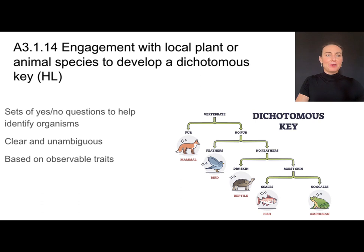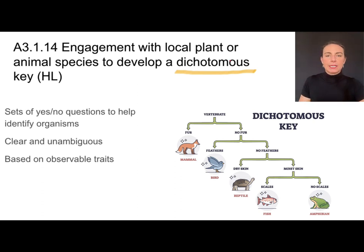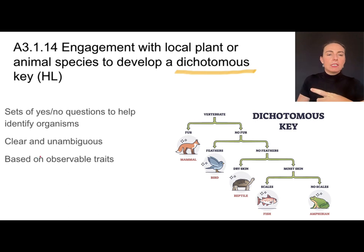Let's say you're out and about and you find what you think is a species and want to identify it. You might use what's called a dichotomous key — the prefix 'di' meaning two — a key with a series of yes/no or either/or questions to help identify an organism. For example, if I find a vertebrate, I decide: does it have fur or no fur? If no fur, does it have feathers? If no feathers, does it have dry skin or moist skin? If dry skin, maybe it's a reptile.